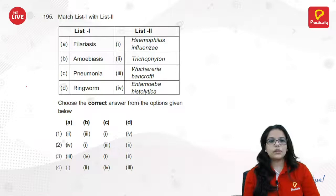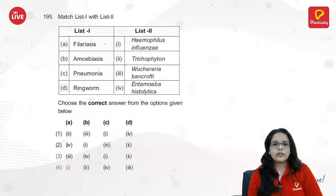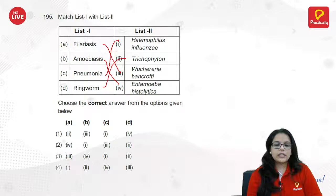Diseases and their microorganisms: filariasis is Wuchereria, amoebiasis is Entamoeba, pneumonia is Haemophilus influenzae, ringworm is Trichophyton. The answer is A3.